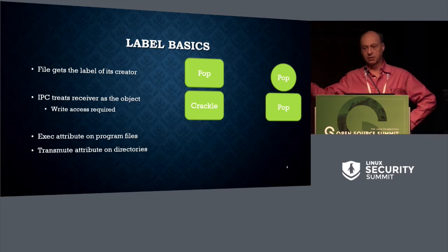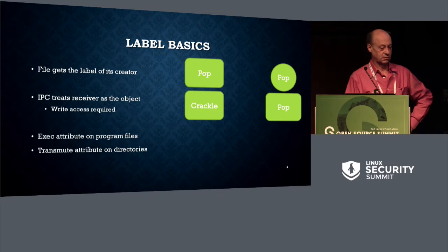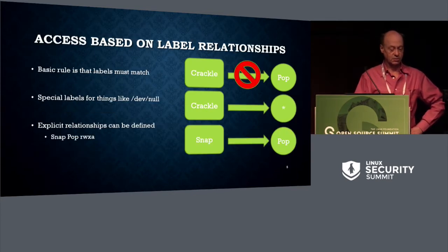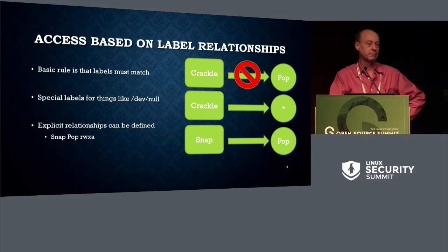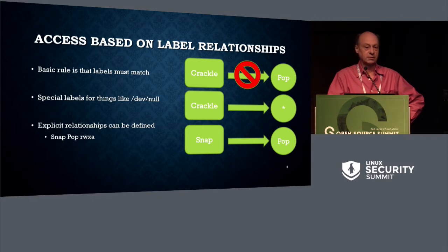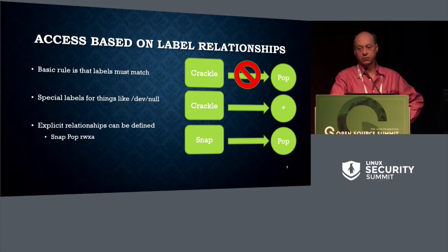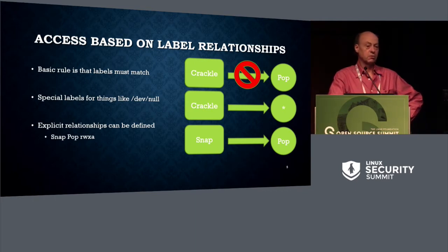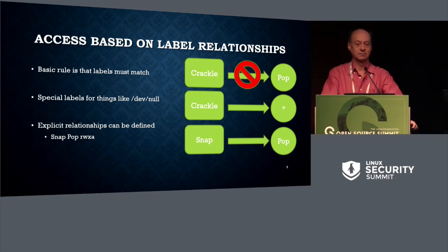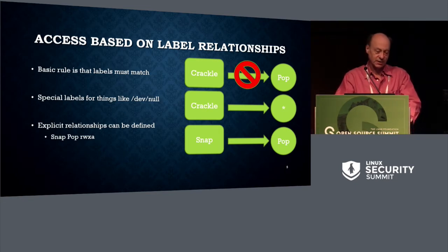Basically, every process has a label, every object has a label, and they're used in comparison to do your access check. SMAC implements a simple separation policy: we compare the labels, and under the right circumstances we either deny or grant access. The basic rule is that if the labels don't match, you don't get access. Isolation is easy — sharing is hard.